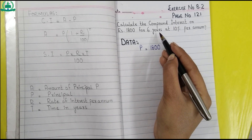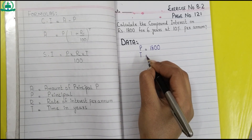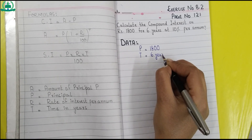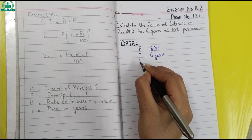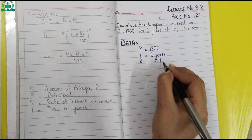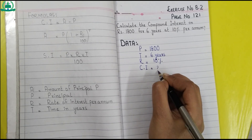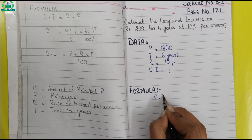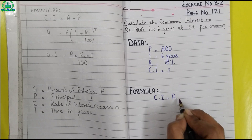The time given in the question is six years, so we write t equals 6 years. The rate percent is 10, so we write r equals 10 percent. Compound interest equals question mark. Give heading 'Formula'. The formula of compound interest is: compound interest equals amount minus principal.